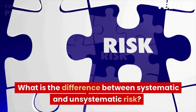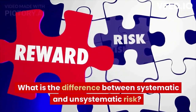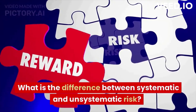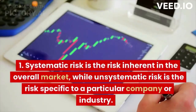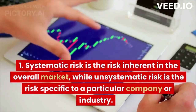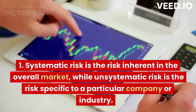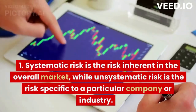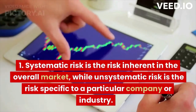What is the difference between systematic and unsystematic risk? Systematic risk is the risk inherent in the overall market, while unsystematic risk is the risk specific to a particular company or industry.